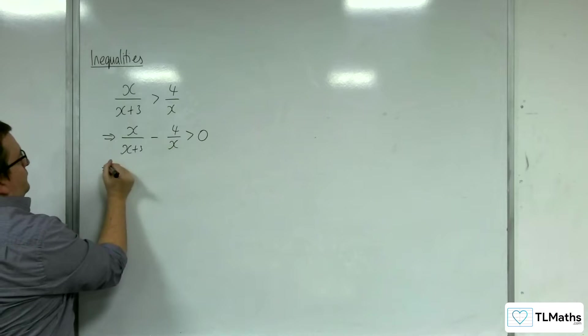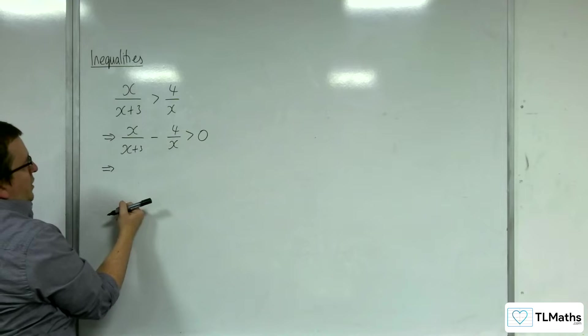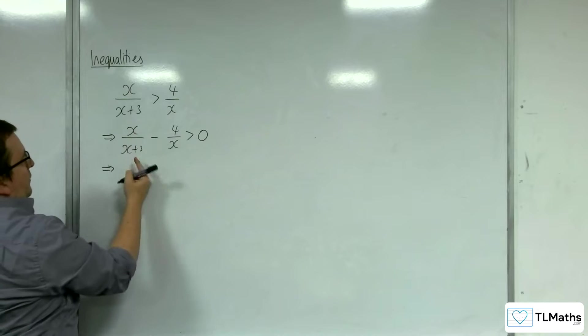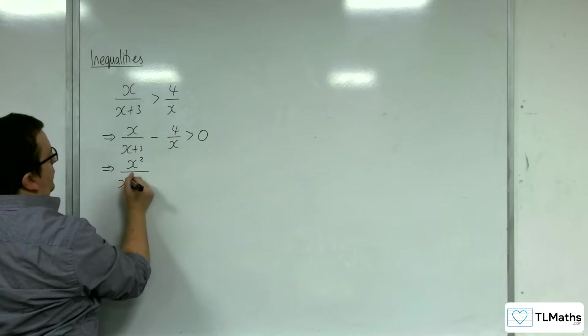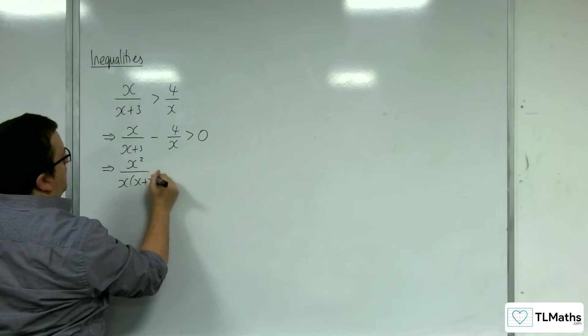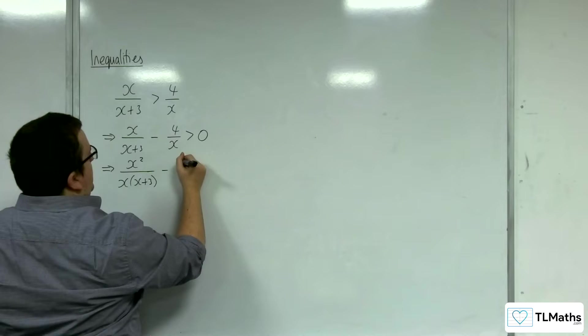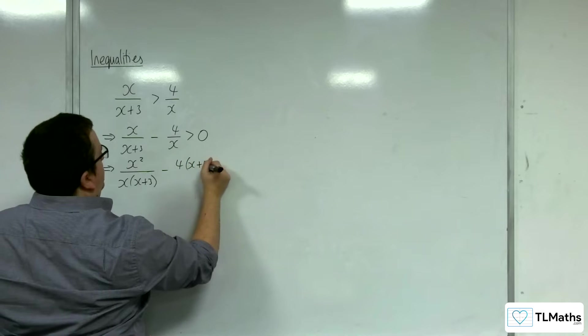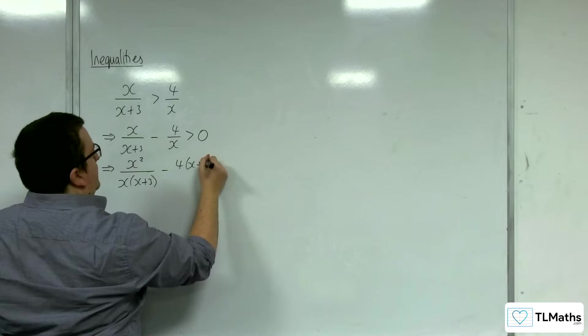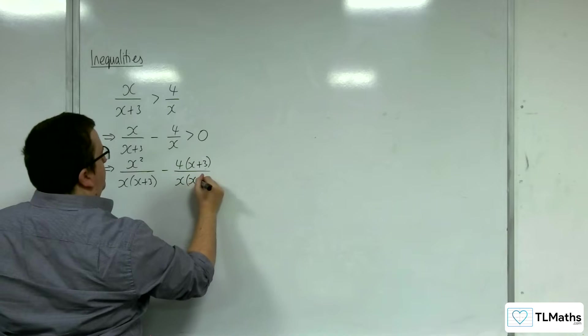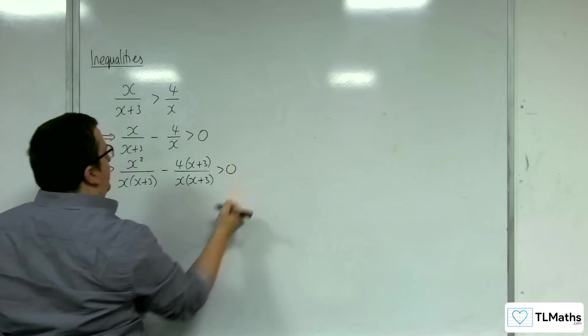So then I'm going to need to get a common denominator. So I'm going to multiply this one top and bottom by x. So we're going to get x squared over x lots of x plus 3. Take away and I'm going to multiply this one top and bottom by x plus 3. So 4 lots of x plus 3 over x x plus 3 is greater than 0.